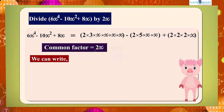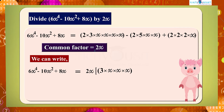So we can write 6x raised to 4 minus 10x squared plus 8x equals 2x multiplied by 3 × x × x × x × x minus 5 × x plus 2 × 2.